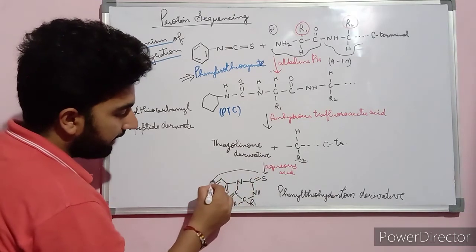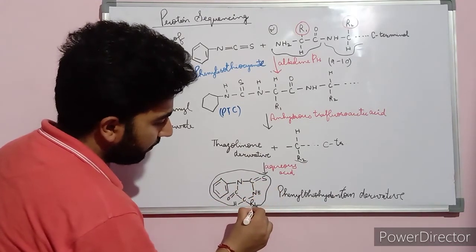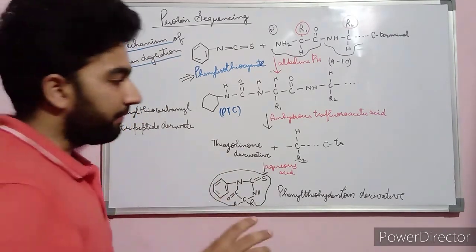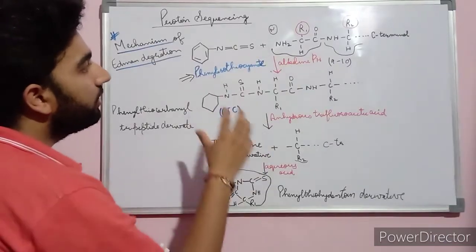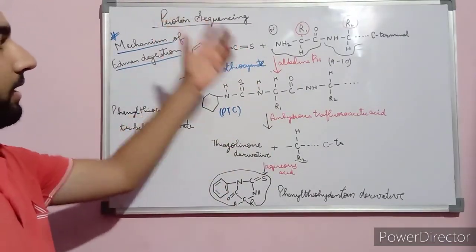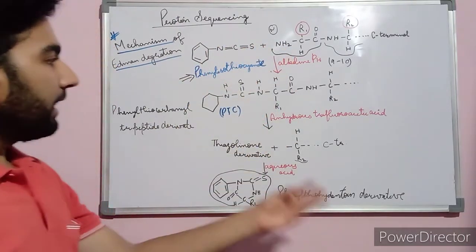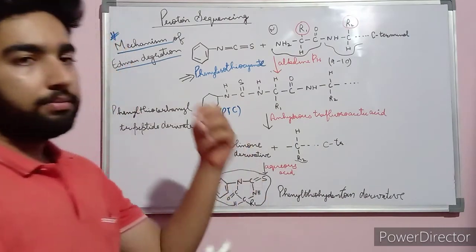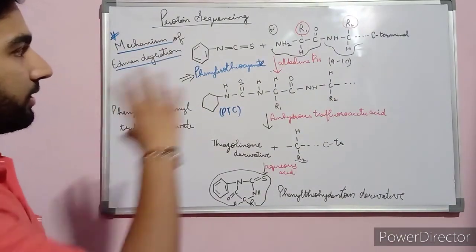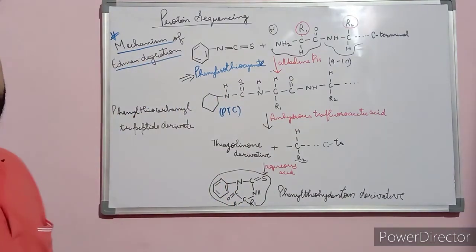This is the final structure that consists of the N-terminal amino acid. From this structure, with the help of chromatography, we can determine the structure of the N-terminal amino acid — whether it is lysine, arginine, aromatic, or whatever the amino acid may be. This is the mechanism of the Edman degradation process.